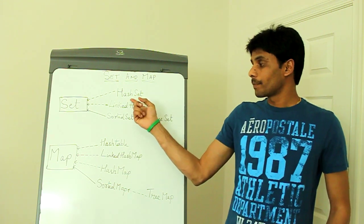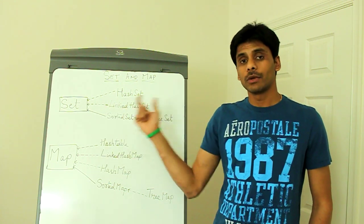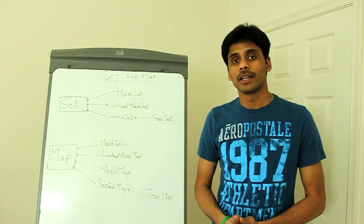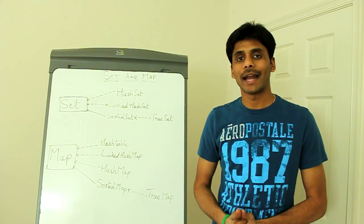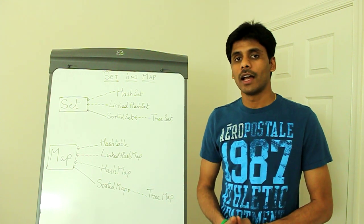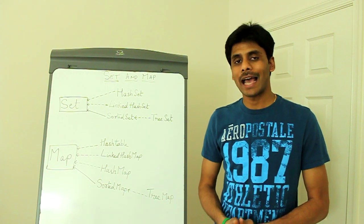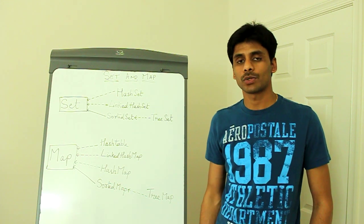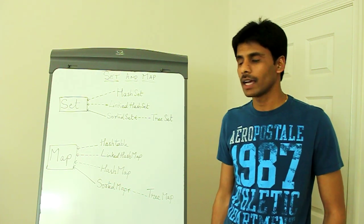A HashSet implements the Set interface and it uses the hashCode method to store the objects as you add them to the HashSet. When you retrieve them back, the HashSet also uses the value the hashCode method returns to retrieve them.